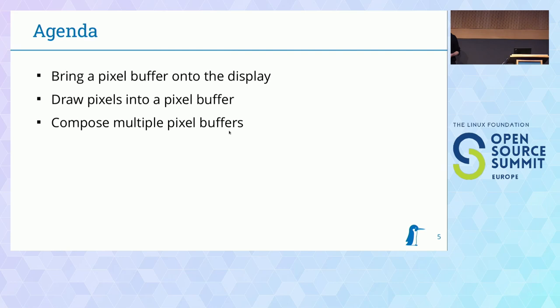The agenda of the talk will be three steps. In the first step, we will try to bring a pixel buffer to the display — meaning we have some buffer filled with color data and bring it out to the display. As a second step, we will be drawing pixels into this buffer so we have a nice image to bring to the display. And in a third step, we will be composing different pixel buffers into one single pixel buffer that can be sent to the display.